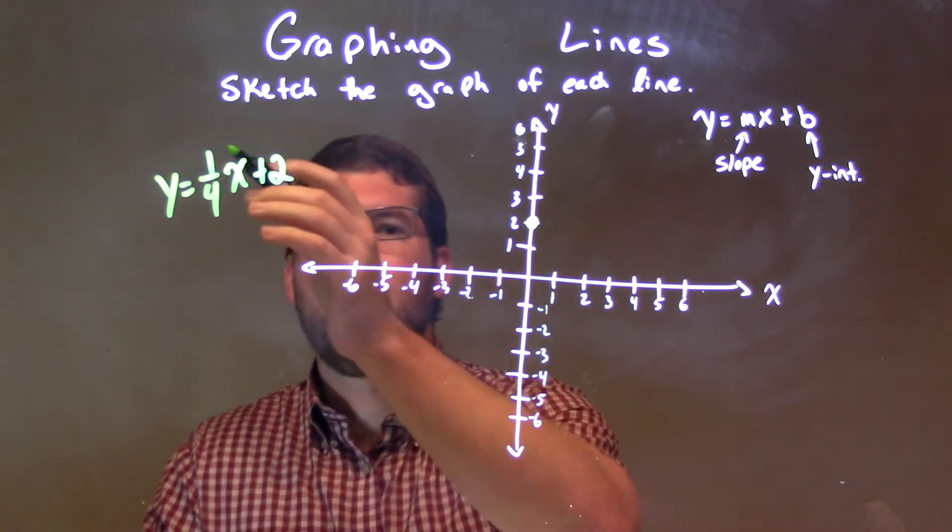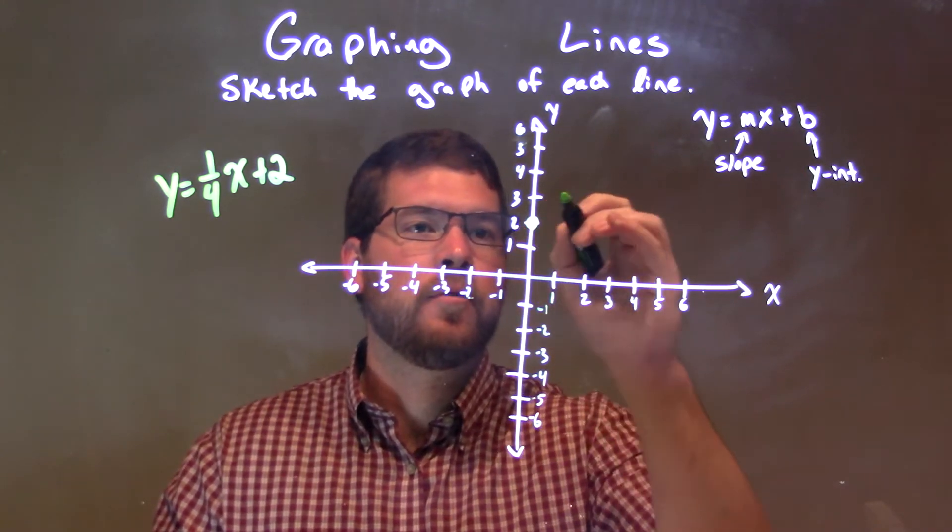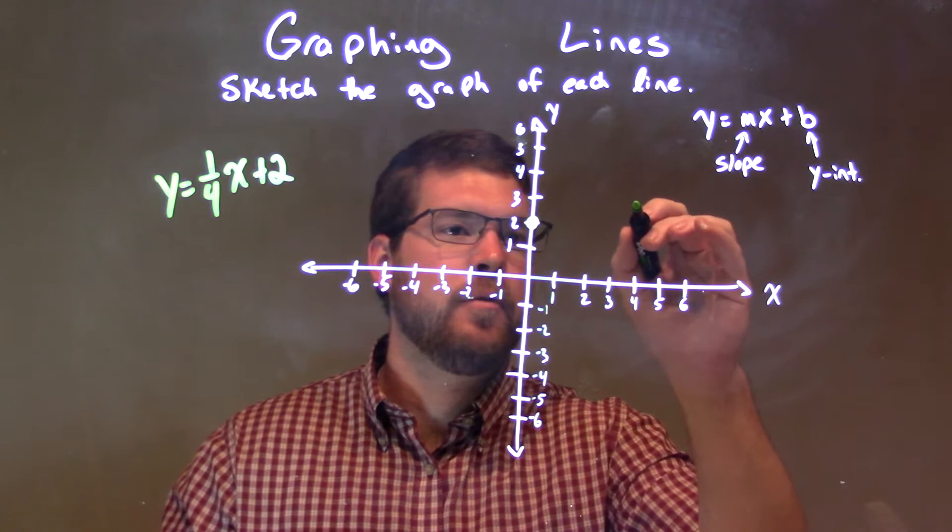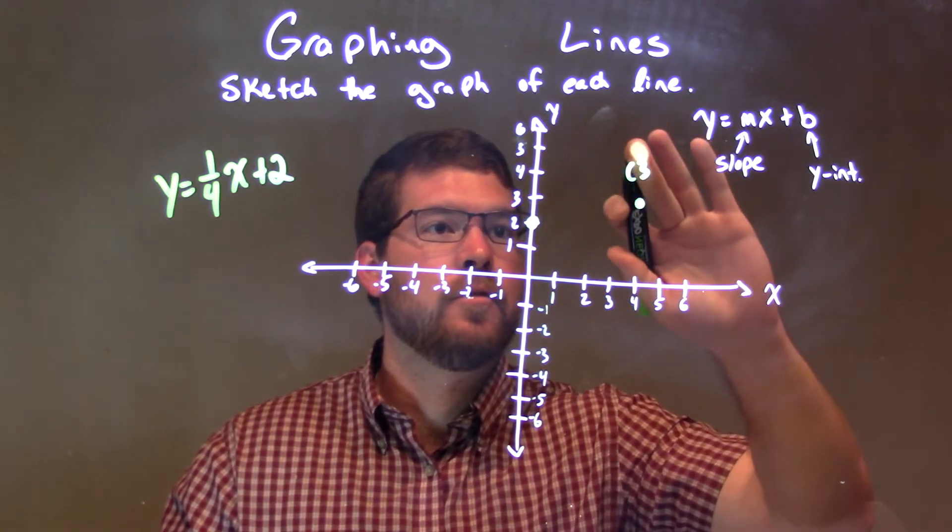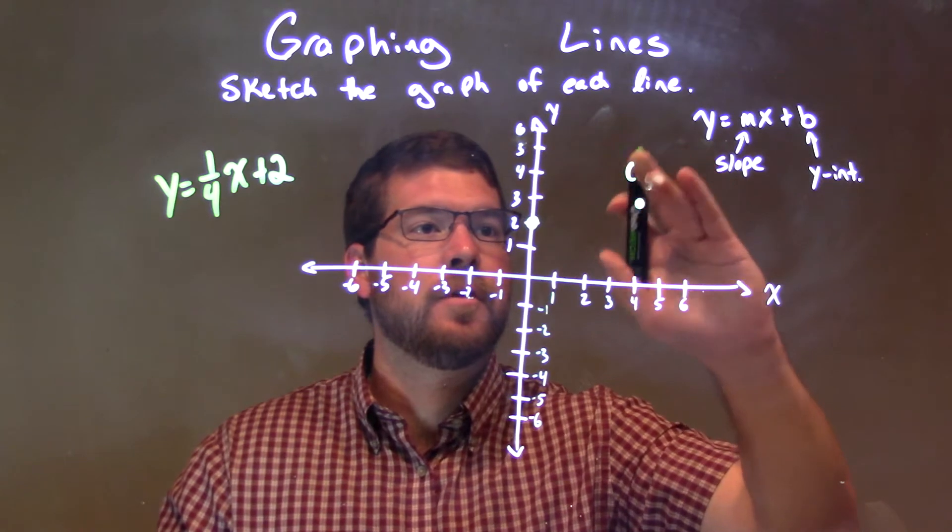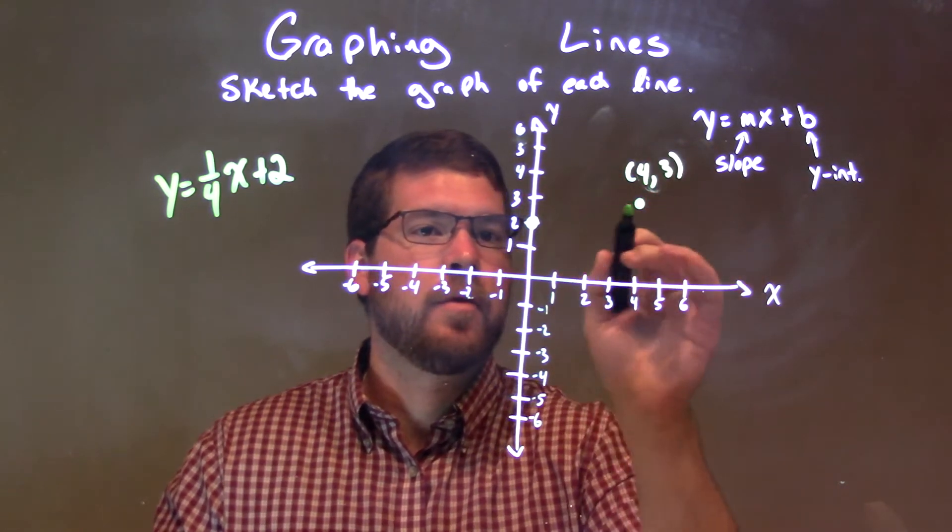Then I have my slope, 1 over 4. So that means I go up 1 unit over 4 units. 1, 2, 3, 4. And right here we have a point at 4. Starting from the y-intercept, the point is at 4 comma 3. So we have a point right there.